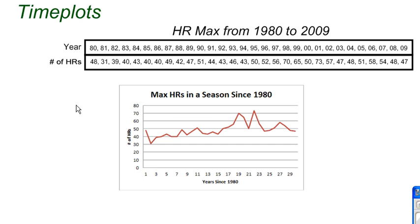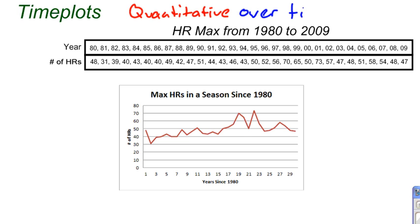Now we're going to take a look at something a little bit different — a different way to display quantitative data over time. All the other ones we've looked at so far, histograms, dot plots, and stem-and-leaf plots, just take the raw data and display it in a certain way. But with time plots, we're taking two variables.